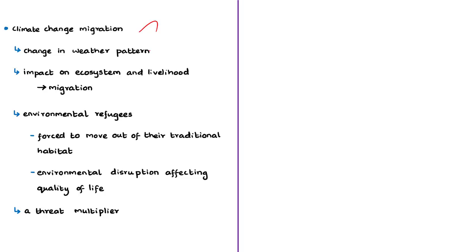One must also note that existing problems in the region — like scarcity of resources, poverty, or internal conflict — can be exacerbated by climate change, making these problems even bigger in the future. This is why climate change is often referred to as a threat multiplier. In this editorial, the author speaks about sea level rise (SLR) as one cause of climate change migration. As discussed in our 30th October Hindu News Analysis, 36 million (3.6 crore) Indians face flood risk due to rising sea levels, based on a new software called Coastal DEM or Coastal Digital Elevation Model.